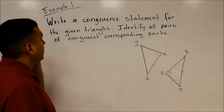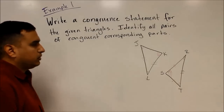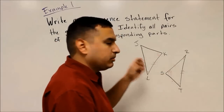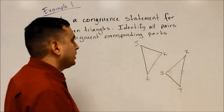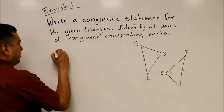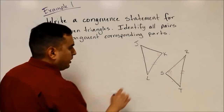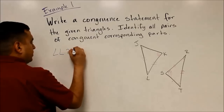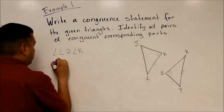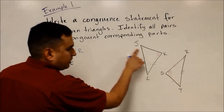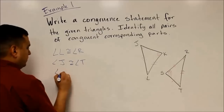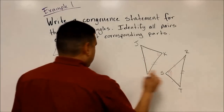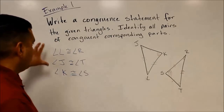Here's example number one. Write a congruent statement for the given triangles and identify all pairs of congruent corresponding parts. Before I name the triangles, I want to look at the individual pieces, see how they correspond, and then that will help me name the two triangles in the correct order. It's easiest to start with the angles. Angle L has one tick mark, so I look on the other triangle for one arc — angle L is congruent to angle R. Angle J has two tick marks, so that corresponds with T. Angle K has three arcs, so it corresponds to angle S.